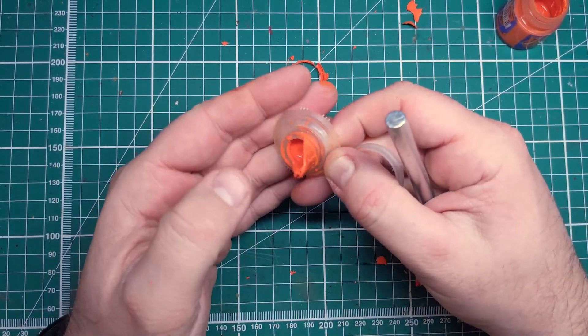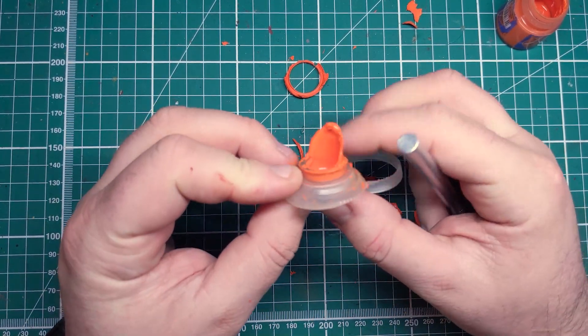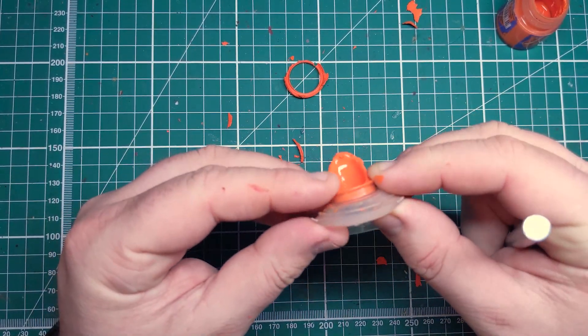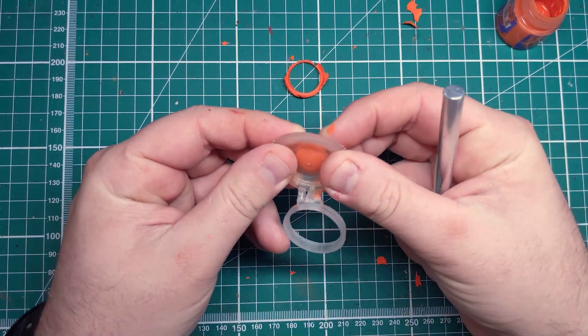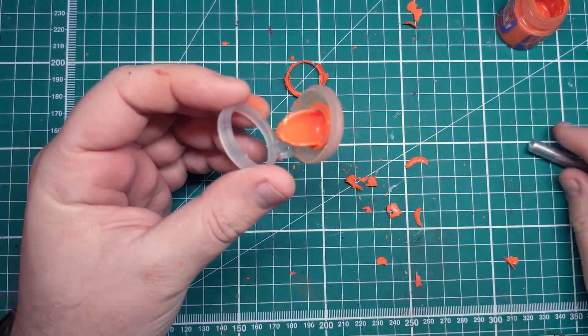Once you're happy that all the gunk has been cleaned out from the lid, you can put your fingers and thumbs back in the same position and pop the lid back round to the right way around. This should take a lot less pressure than it was to pop it inside out, as this is the way that it's designed to be.